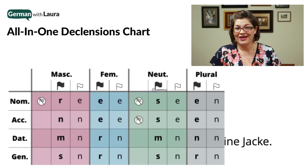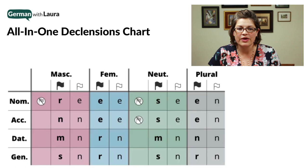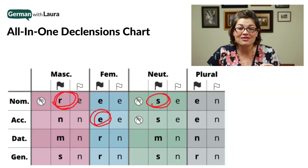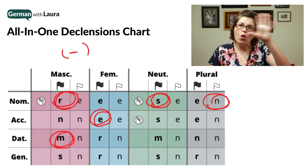Check out this table — this is my all-in-one declensions chart. We have five declensions: R's, E's, S's, N's, and M's, and every once in a while no declension at all, which I'll symbolize with a dash. This whole chart is made up of these single letters of declensions.